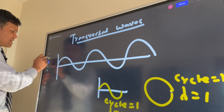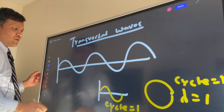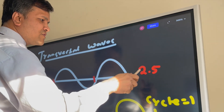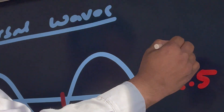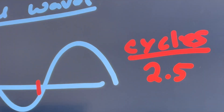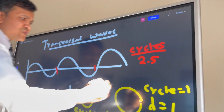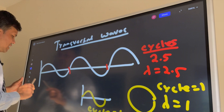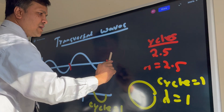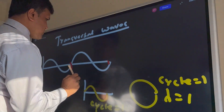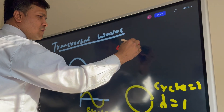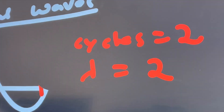With this understanding, tell me how many cycles here: one, two, two and a half — so 2.5 cycles. And what is the wavelength? The wavelength is also 2.5. Now if I remove this one, how many cycles? Of course 2. And what is the wavelength? Of course 2.